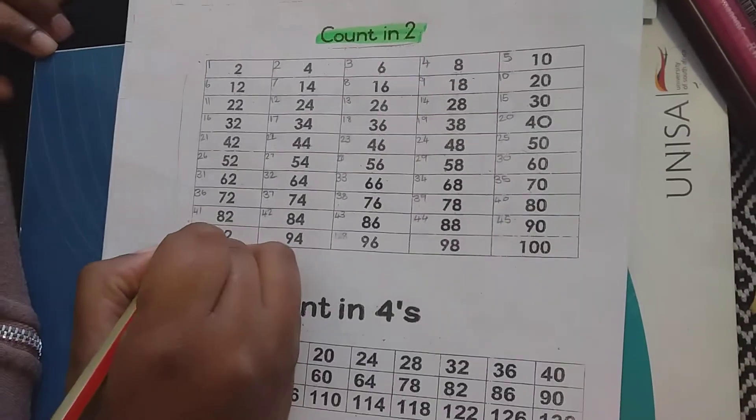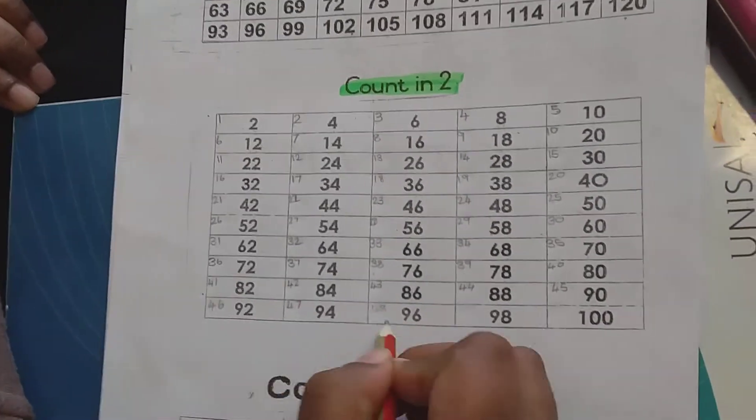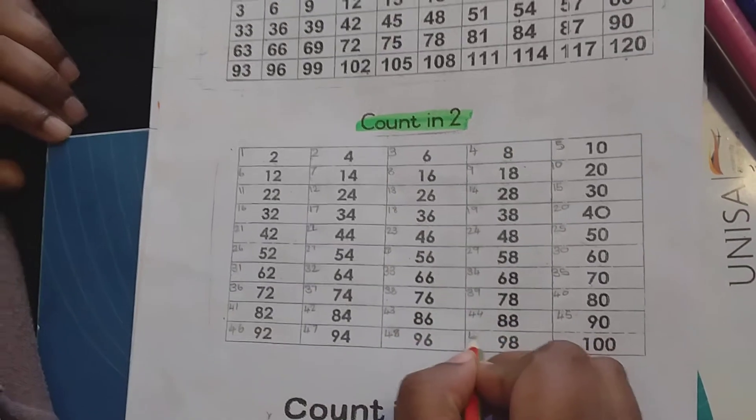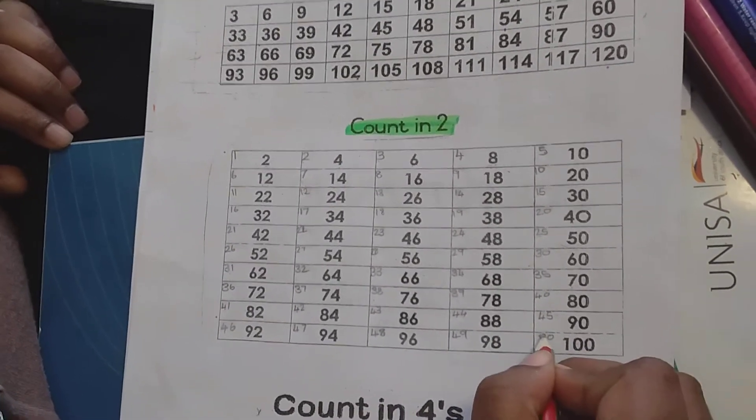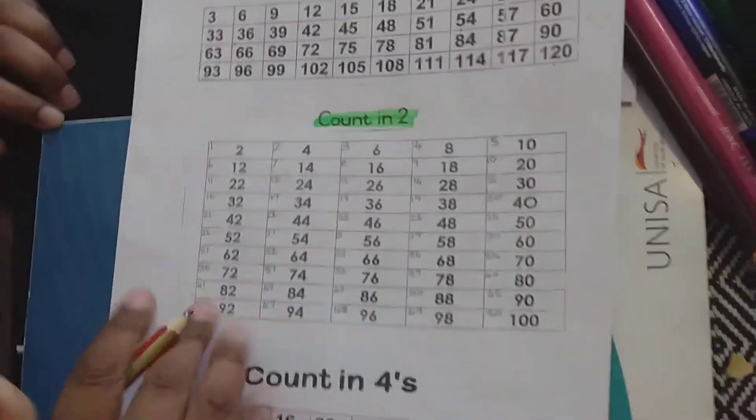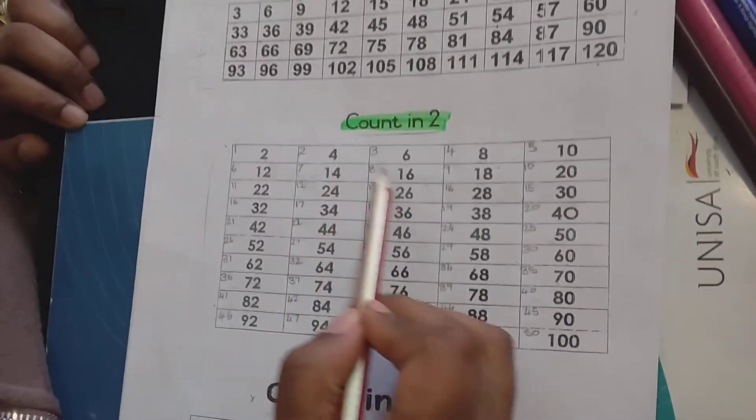45, 46, 47, 48, 49, 50. So every day you count in twos: 2, 4, 6, 8, 10, 12, 14.